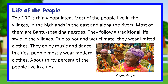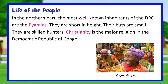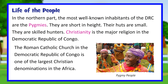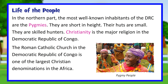The DRC is thinly populated. Most of the people live in the villages, in the highlands in the east and along the rivers. Most of them are Bantu-speaking Negroes who follow a traditional lifestyle in the villages. Due to the hot and wet climate, they wear limited clothes, and they enjoy music and dance. In cities, people mostly wear modern clothes, and about 30% of the people live in cities. In the northern part, the most well-known inhabitants of the DRC are the Pygmies. They are short in height, their huts are small, and they are skilled hunters. Christianity is the major religion in the DRC, and the Roman Catholic Church in the Democratic Republic of Congo is one of the largest Christian denominations in Africa.